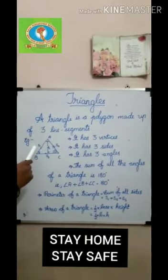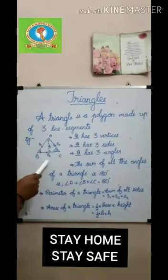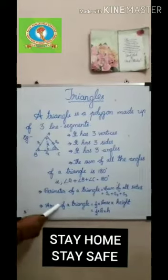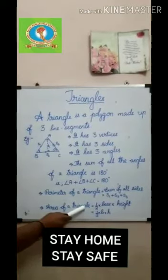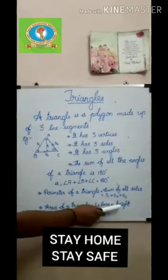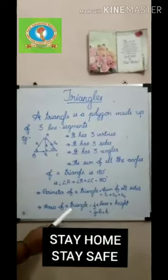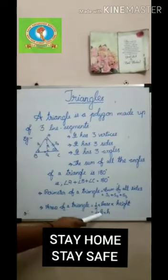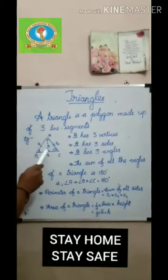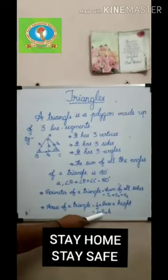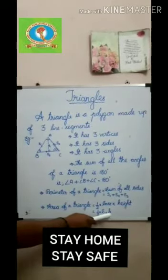The perimeter is S1 plus S2 plus S3. Now, to find the area of a triangle, the formula is half into base into height. Here the base is BC, and the height is the perpendicular distance from the vertex to the side BC — that is, half into B into H.